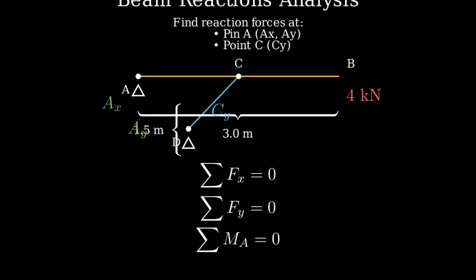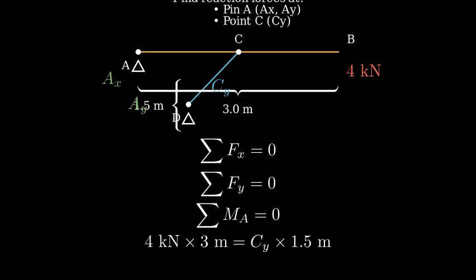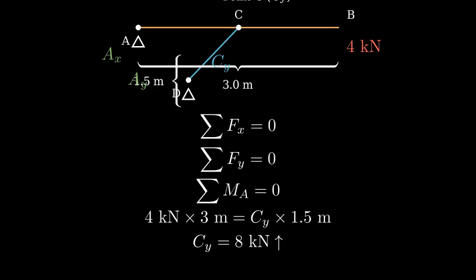Let's take moments about point A to eliminate the unknown reactions at A. Taking moments about A, we have the four kilonewton force times three meters equals Cy times one point five meters. Solving for Cy, we get eight kilonewtons upward.